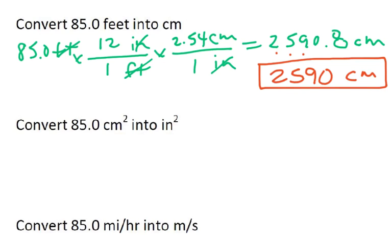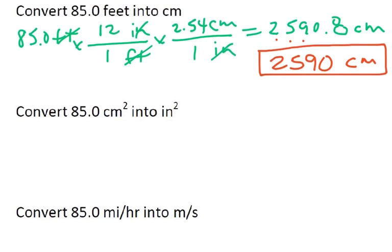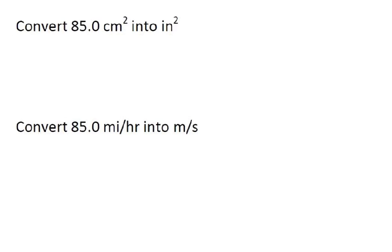Next problem, we want to convert 85 centimeters squared into inches squared. That's going to be a slightly different situation. I'm going to have 85 centimeters squared. I happen to know that there are 2.54 centimeters in 1 inch. A centimeter doesn't completely cancel out centimeters squared. So I'm going to use this same conversion factor again. I'll put the 1 inch on top and the 2.54 centimeters on the bottom.